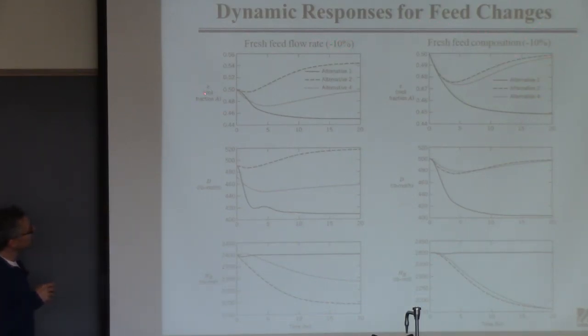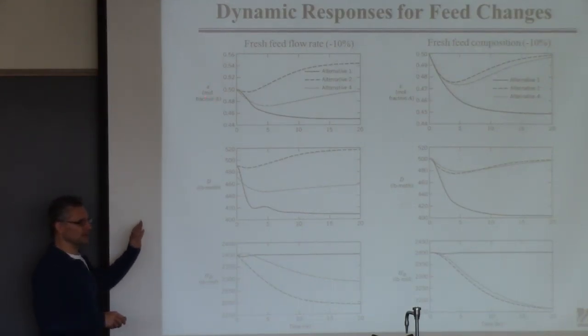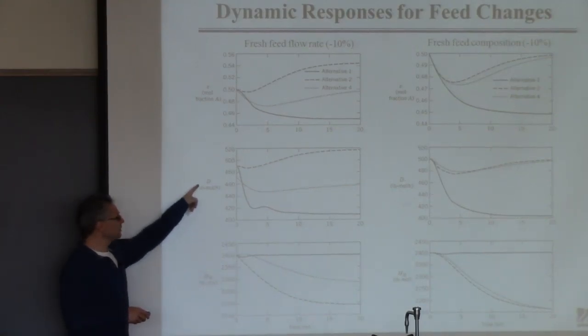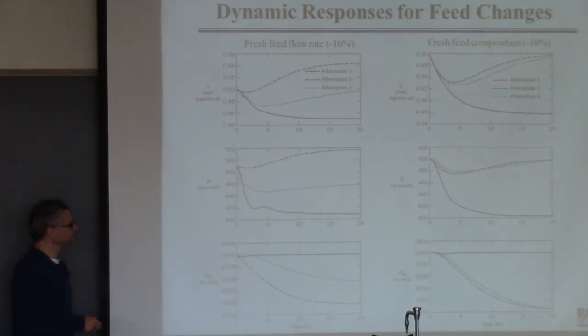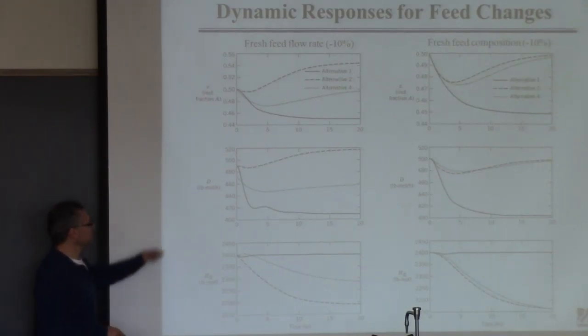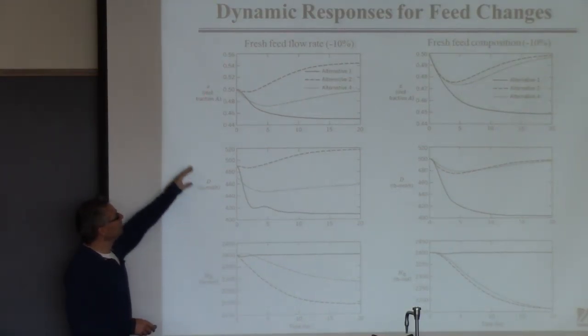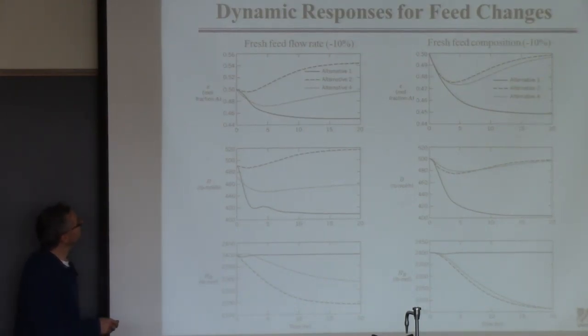All right, so two scenarios here: feed flow drops by ten percent, feed composition drops by ten percent, and then you're looking at various things in the column that we think might have sensitivity. Remember the things I told you might be sensitive to these disturbances. Z is the composition of the stream going from the reactor to the column, this is the distillate flow in the column, and this is the level of the reactor. These are things we said might be highly sensitive if you don't do things the right way. What would we like the controller to do? None of these are the things we're actually trying to control. We're trying to see if the control schemes that we've developed exhibit high sensitivity to these disturbances.